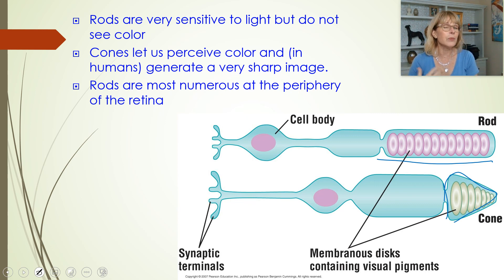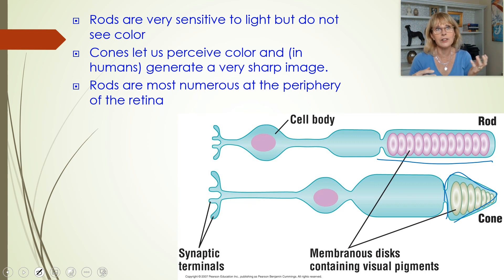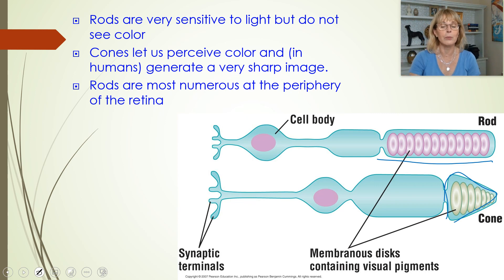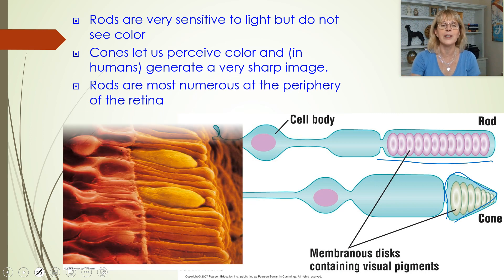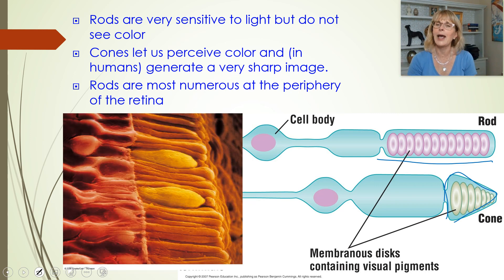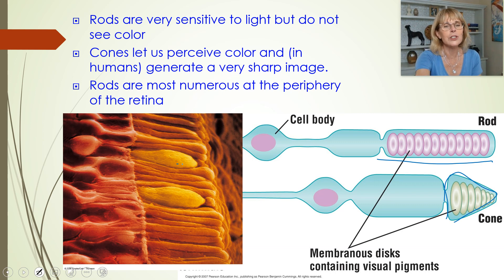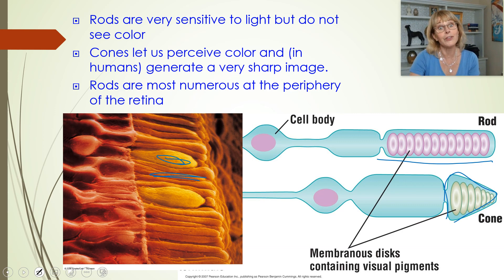That's why if something is very dim — like you're trying to see your way out of a dark closet — you don't want to directly stare at it; you want to use your peripheral vision. This is what a cone looks like, and that's what a rod looks like — that's how they got their names.